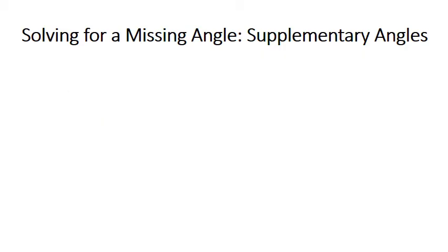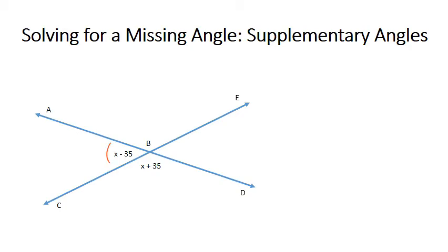Let's look at one more. In this case, I have something a little bit different. I have x minus 35 and x plus 35. So I'm going to go ahead and set up my equation. Again, I notice that they make a straight line across the bottom here. So I can write x minus 35 plus x plus 35 equals 180.